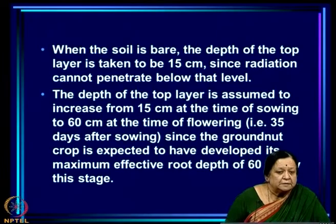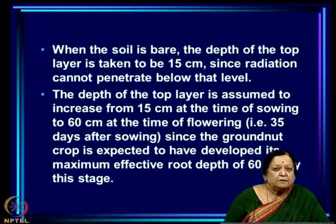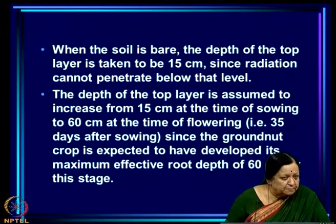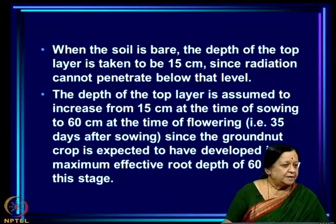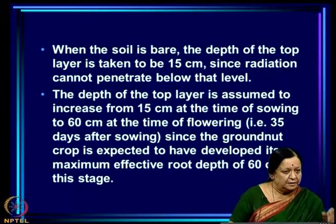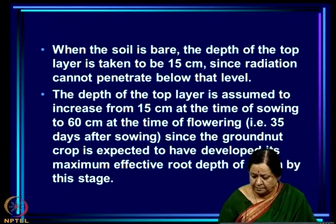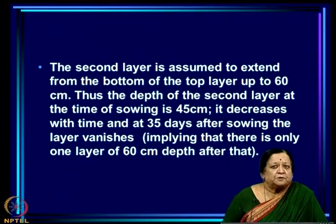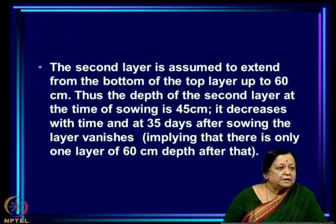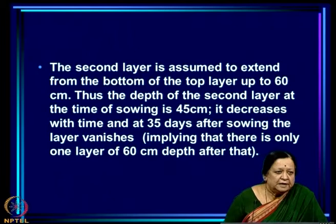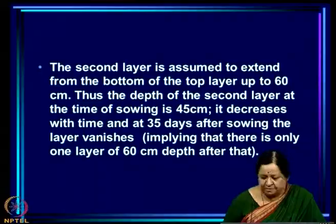The depth of the top layer is assumed to increase from 15 cm at the time of sowing to 60 cm at the time of flowering, which is 35 days after sowing, because the groundnut crop is expected to have developed its maximum effective root depth of 60 cm by this stage. As the plant develops its roots deeper into the soil, we increase the top layer from 15 to 60 cm, and the second layer extends from the bottom of the top layer — so initially the top layer is 15 cm and the bottom layer is 45 cm, until 35 days after sowing when there is just one 60 cm layer.